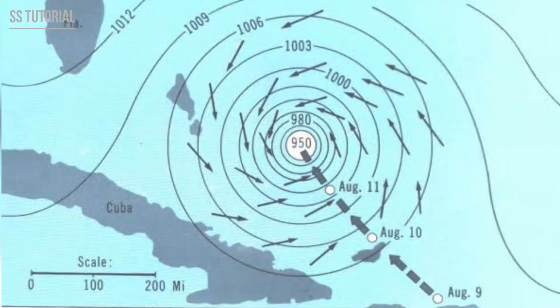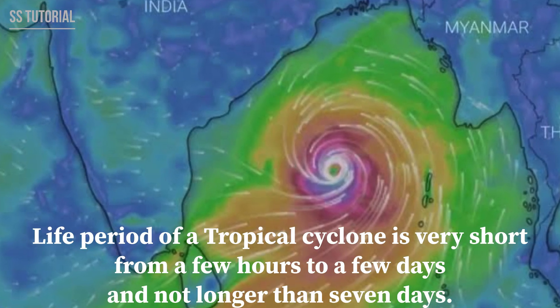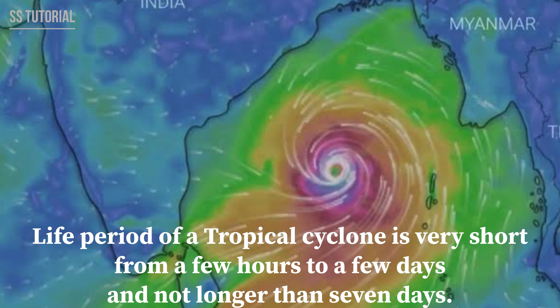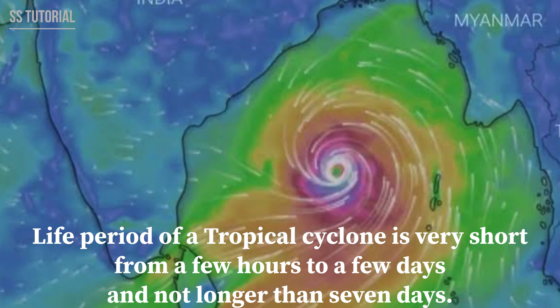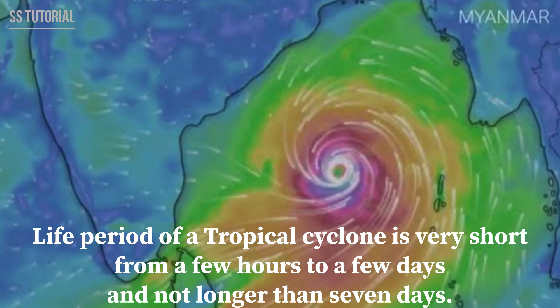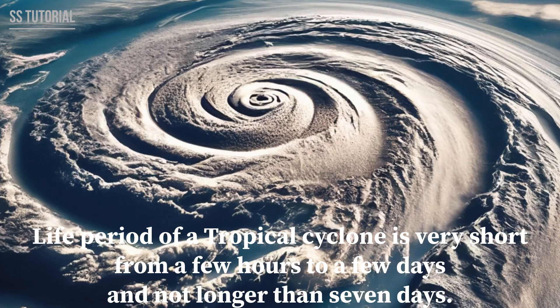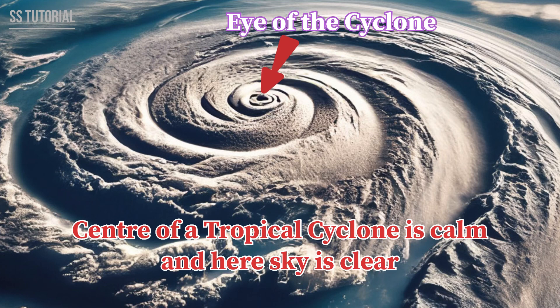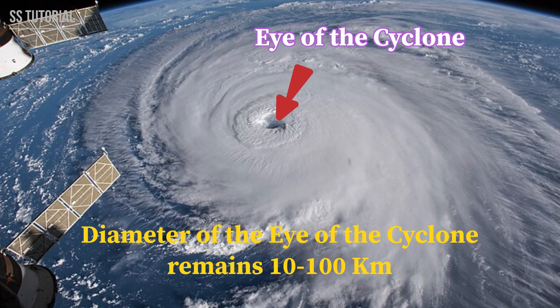The diameter of a tropical cyclone can be 200 to 500 kilometers and sometimes up to 1,000 kilometers. The eye wall of a tropical cyclone remains spiral in shape. Tropical cyclones last for a very short period, generally from a few hours to a few days and not longer than seven days. The center of the tropical cyclone remains calm with a clear sky and is known as the eye of the cyclone, ranging from 10 to 100 kilometers.